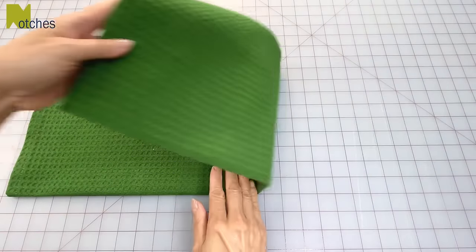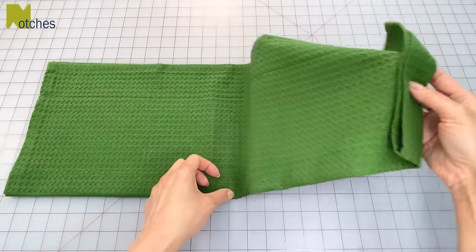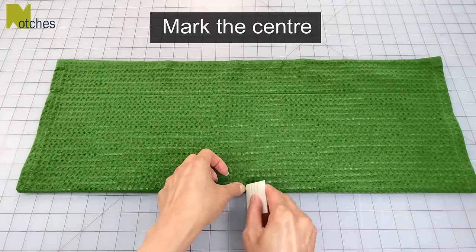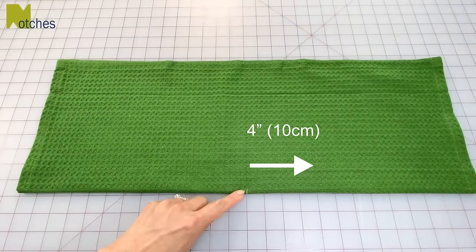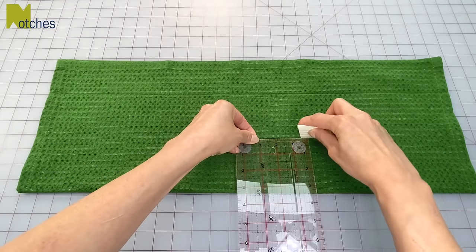Fold your towel in half again and then just crease it right in the center. Open it up and then mark that center with chalk or a vanishing ink pen. From the center, measure across four inches and then up three and a half inches and make a mark.